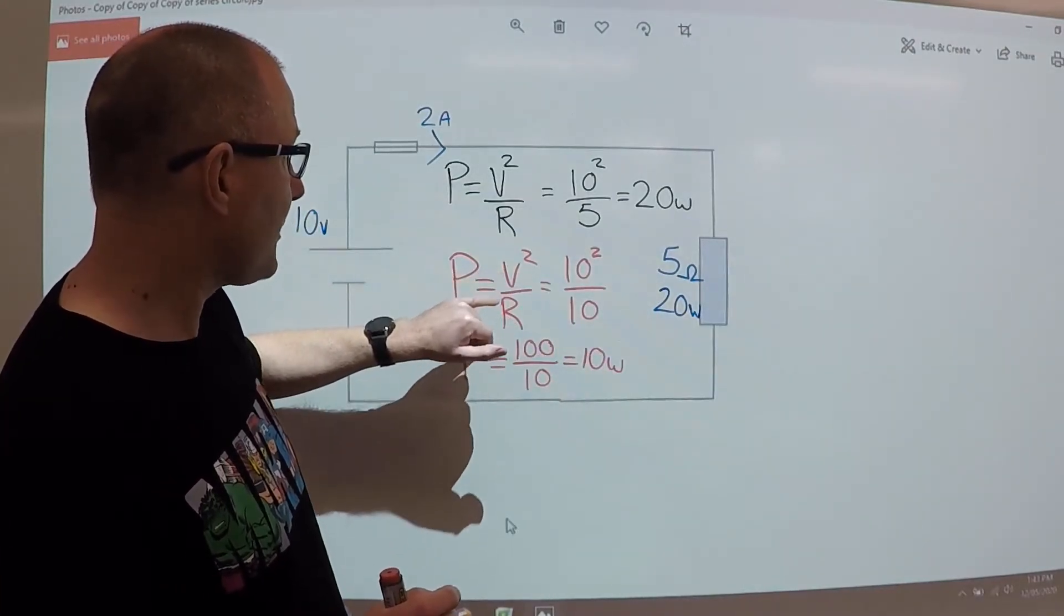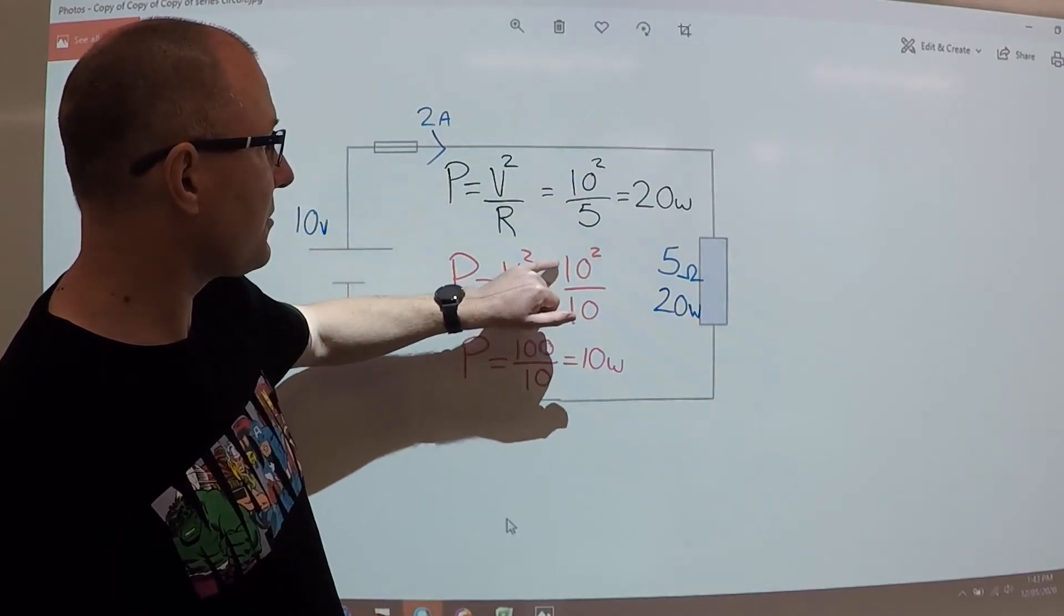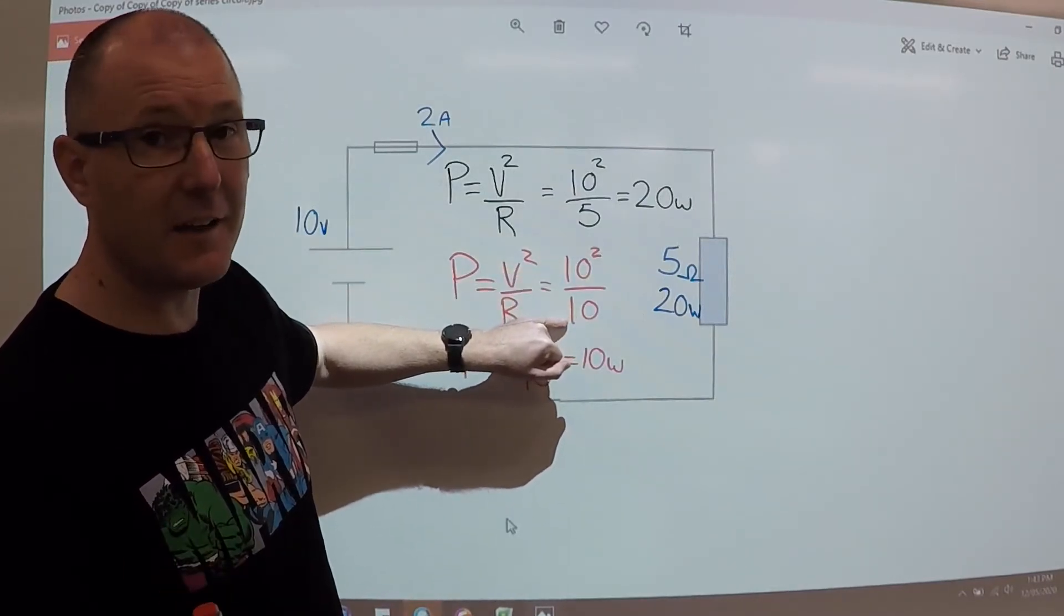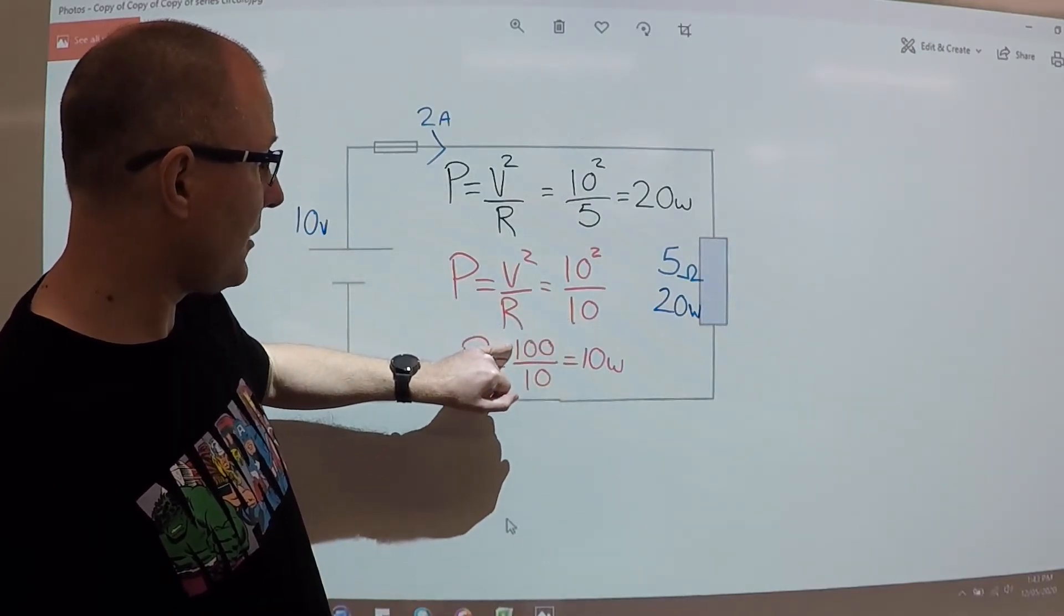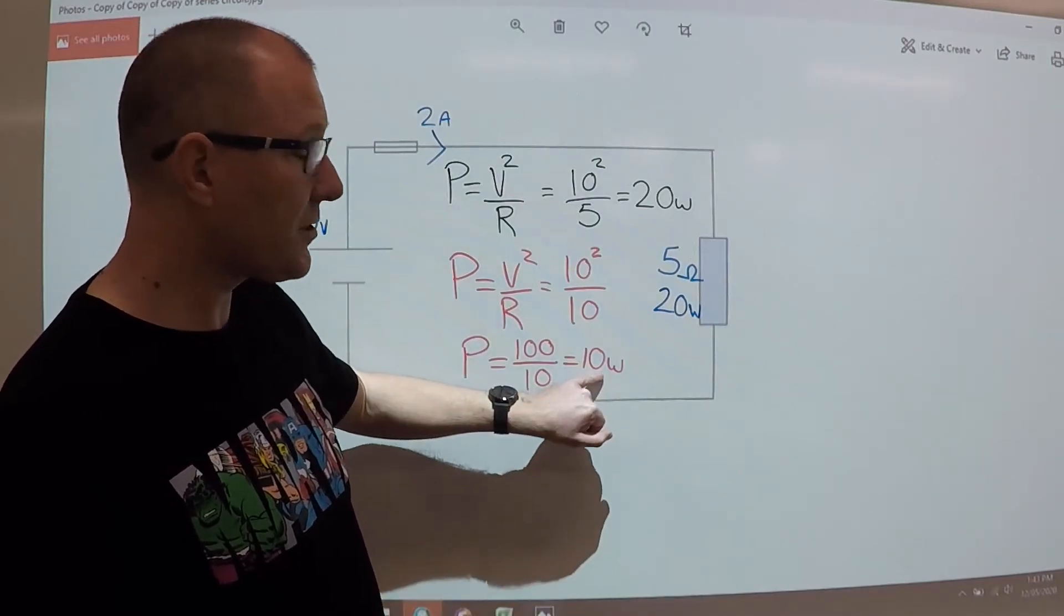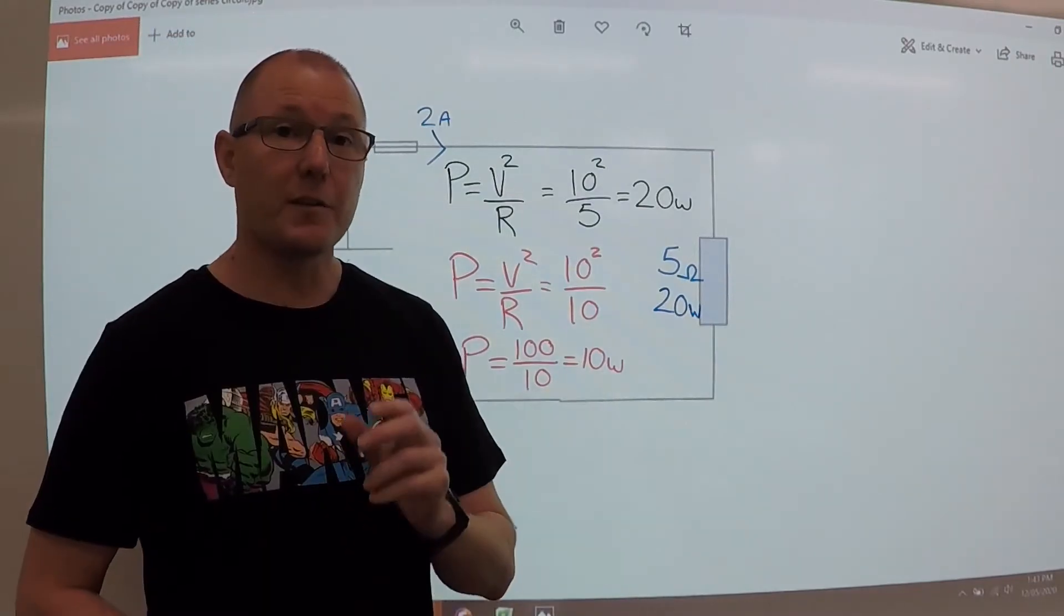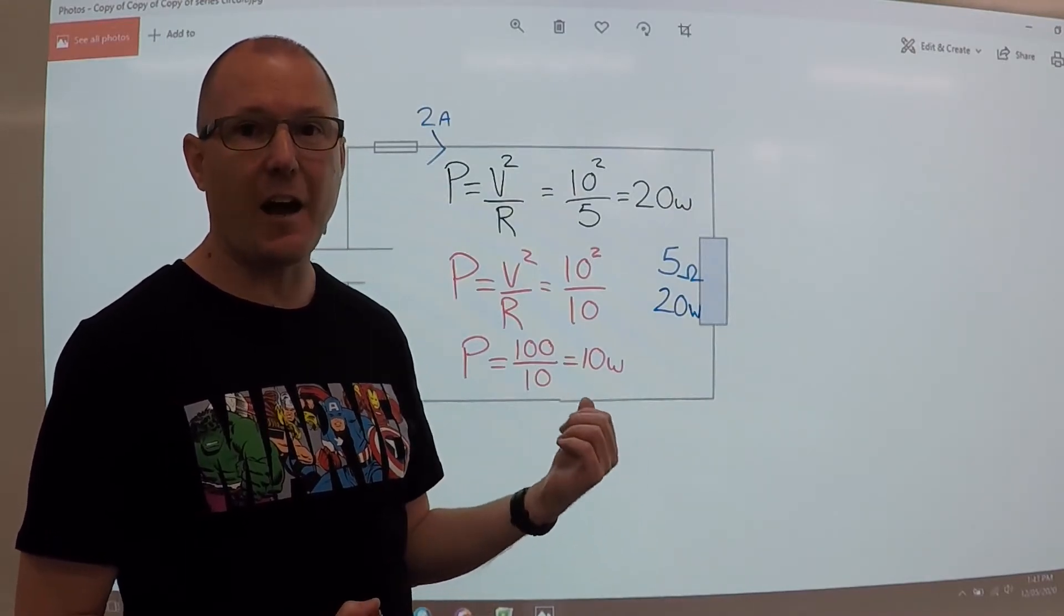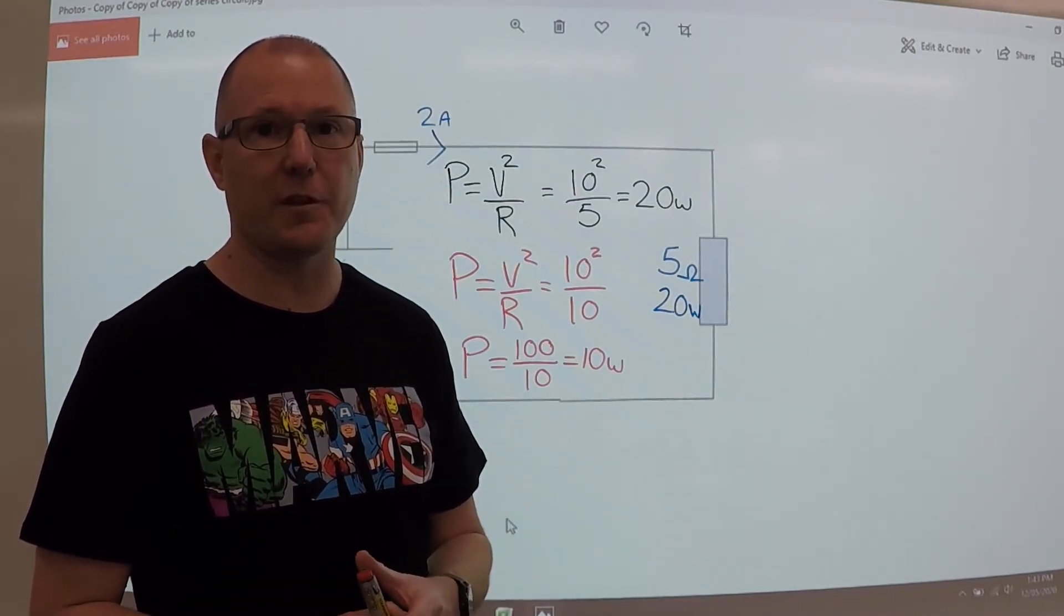Now let's say we double the resistance this time. So, voltage squared divided by the resistance, so 10 squared divided by the 10 now, so that gives us 100, which is 10 squared, divided by the 10, now that's given us 10 watts. By doubling the resistance, and not changing the voltage, that has halved the power of the circuit.